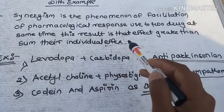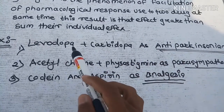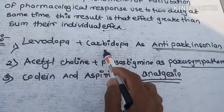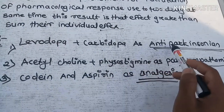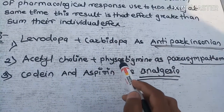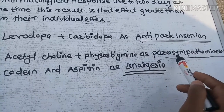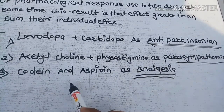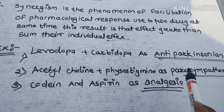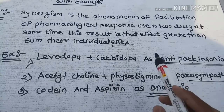Let's see some examples of synergism. Levodopa plus Carbidopa is used as an anti-Parkinsonism treatment. Next, Acetylcholine plus Physostigmine is used as a parasympathomimetic. Codeine plus Aspirin is used as an analgesic. This is a very simple topic.